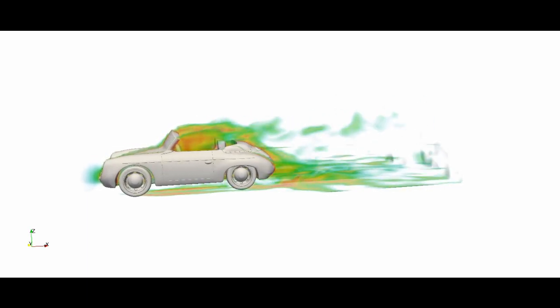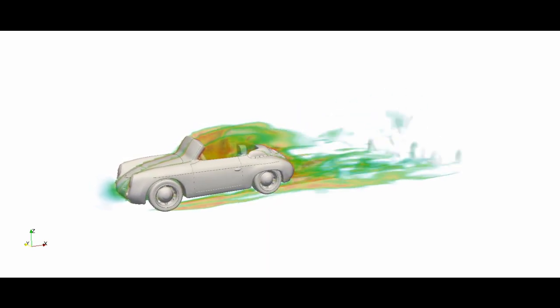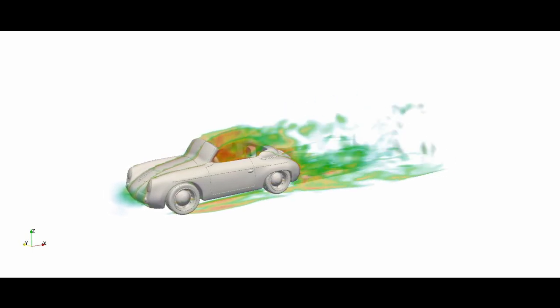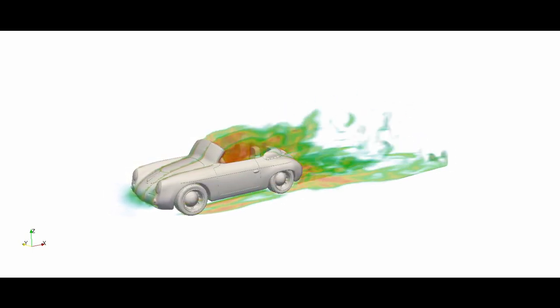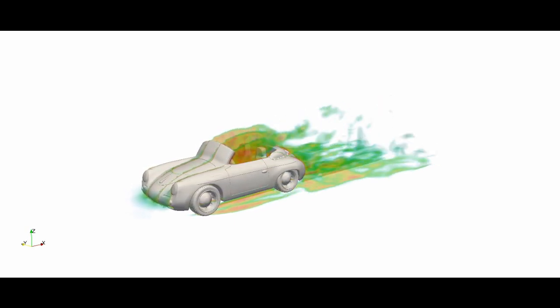To visualize the moving vortices I used multiple layers of slices of the simulation results. In these slices all velocities with higher velocities than the traveling speed of the car of 25 m/s are set to invisible.